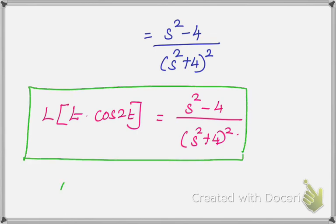It is a shortcut for finding L{t·sin at} or L{t·cos at} anywhere. In the formula, you use it, shortcut to apply. Okay. Derivation is not needed, directly you apply the formula, you get the answer. Okay, thank you.